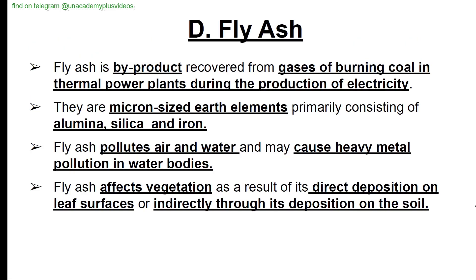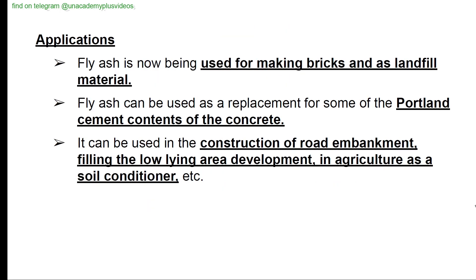Fly ash is a by-product recovered from gases of burning coal in thermal power plants during electricity production. It consists of micron-sized earth elements, primarily alumina, silica, and iron. Fly ash pollutes air and water and may cause heavy metal pollution in water bodies. It affects vegetation through direct deposition on leaf surfaces or indirectly through soil deposition. Applications: fly ash is used for making bricks, as landfill material, as a replacement for Portland cement in concrete, in road embankment construction, filling low-lying areas, and as a soil conditioner in agriculture.